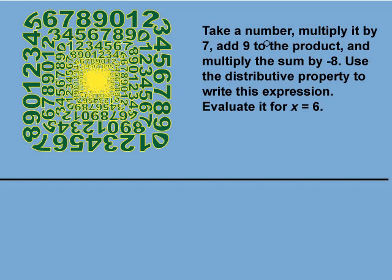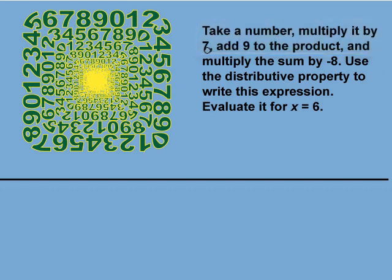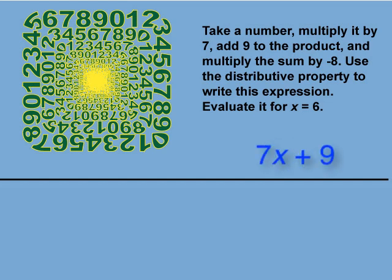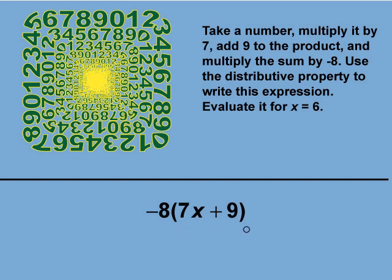Let's start with this part. Take a number and multiply it by 7. Since we don't know which number, we designate it as 7x. This number is increased by 9, so we write 7x plus 9. This sum, or the entire expression, is multiplied by negative 8. So we enclose the expression in parentheses and multiply the whole expression by negative 8, as shown here. This is the mathematical equivalent of this verbal expression.